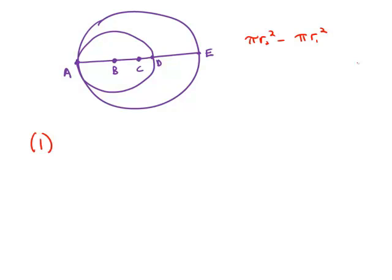Statement number one tells us that AB equals 3 and BC equals 2. Well, AB, that's the radius of the smaller circle.